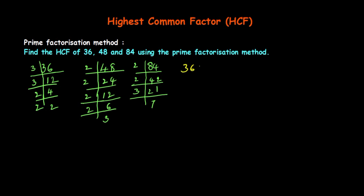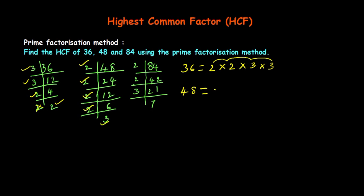Now I'll write the prime factors. The prime factors of 36 are 2 × 2 × 3 × 3, because 2 × 2 = 4, 4 × 3 = 12, 12 × 3 = 36. The prime factors of 48 are 2 × 2 × 2 × 2 × 3. The prime factors of 84 are 2 × 2 × 3 × 7.